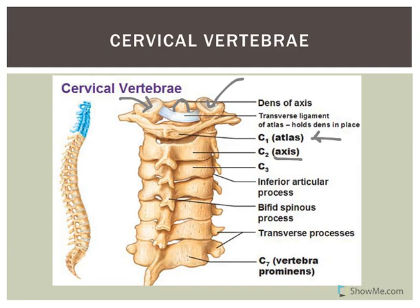Once you have an intervertebral disc between vertebrae, it limits some movement. The joints between the occipital bone and atlas, and between atlas and axis, are synovial or diarthritic joints. The joint between C1 and the occipital bone permits flexion and extension — you nod your head. The joint between C1 and C2 is a rotational joint that allows you to look left and right.